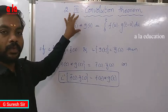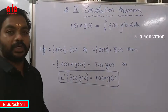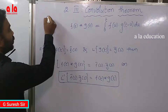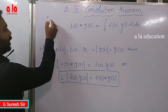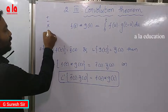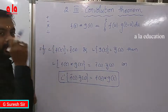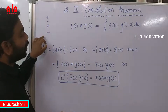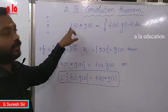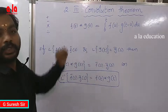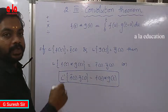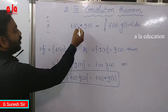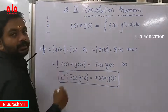First, we discuss what is convolution product. In general, we have addition, subtraction, product, and division. If we write the operator side, we read the particular additional convolution product. The symbol for convolution product is star.